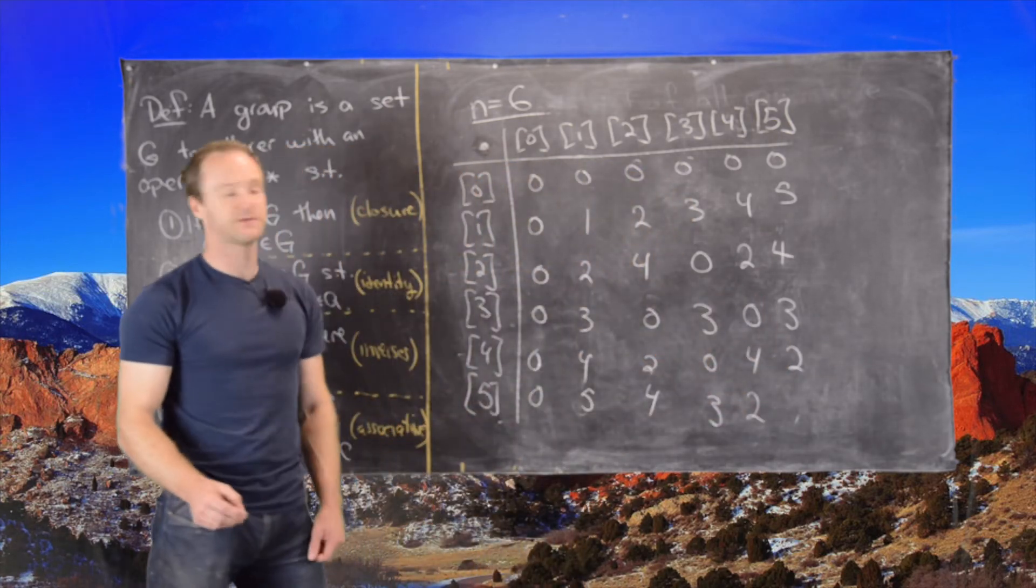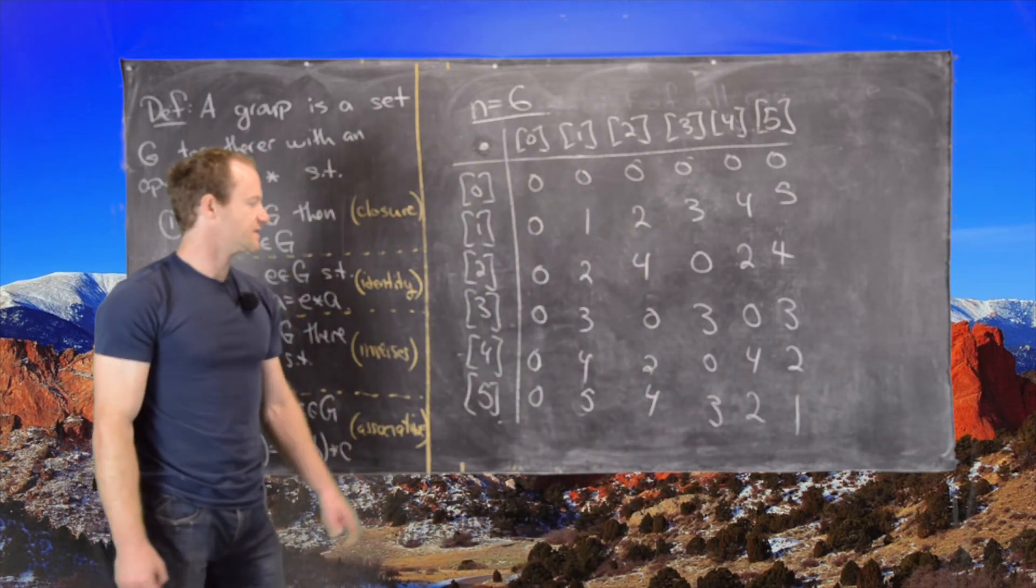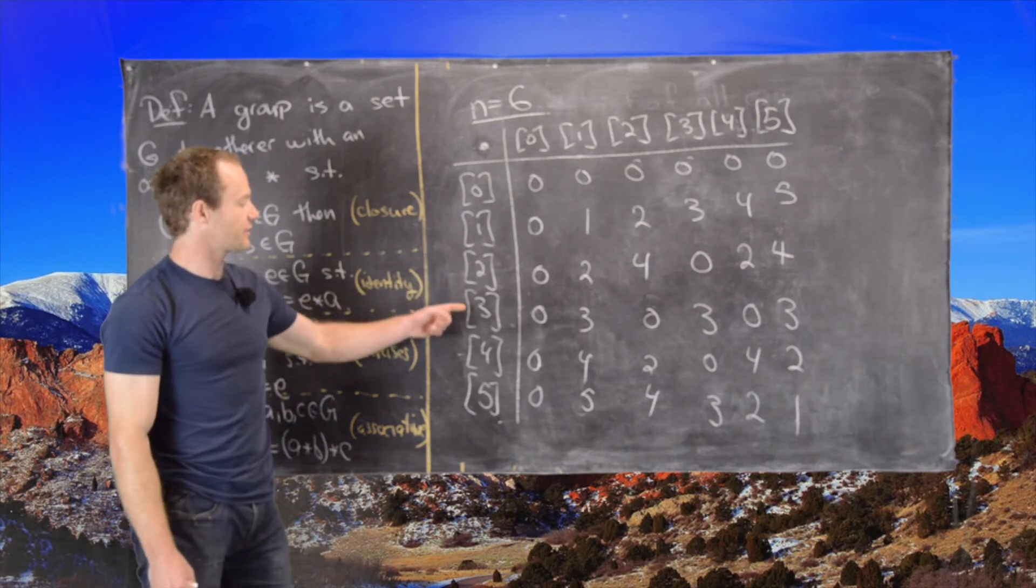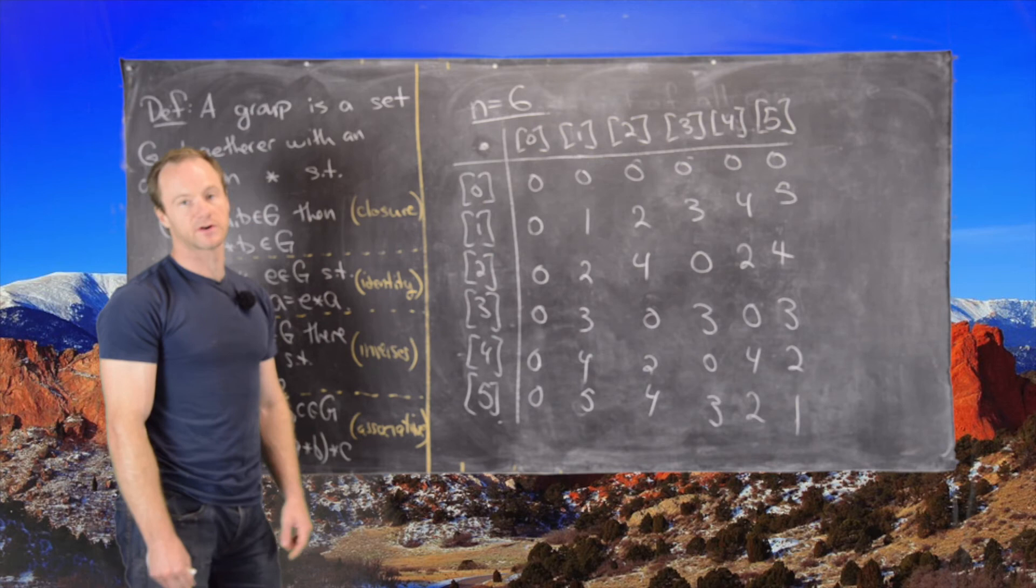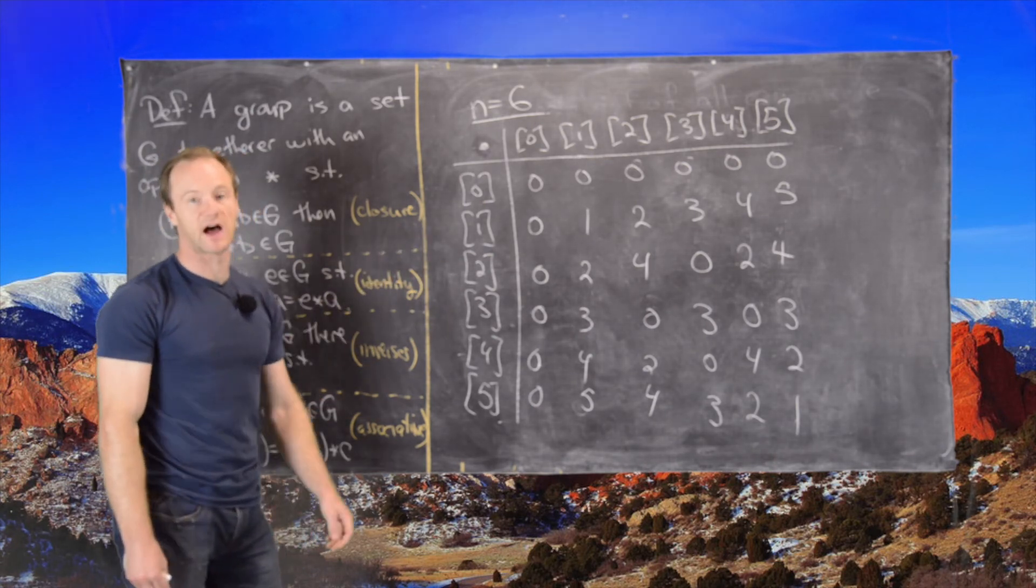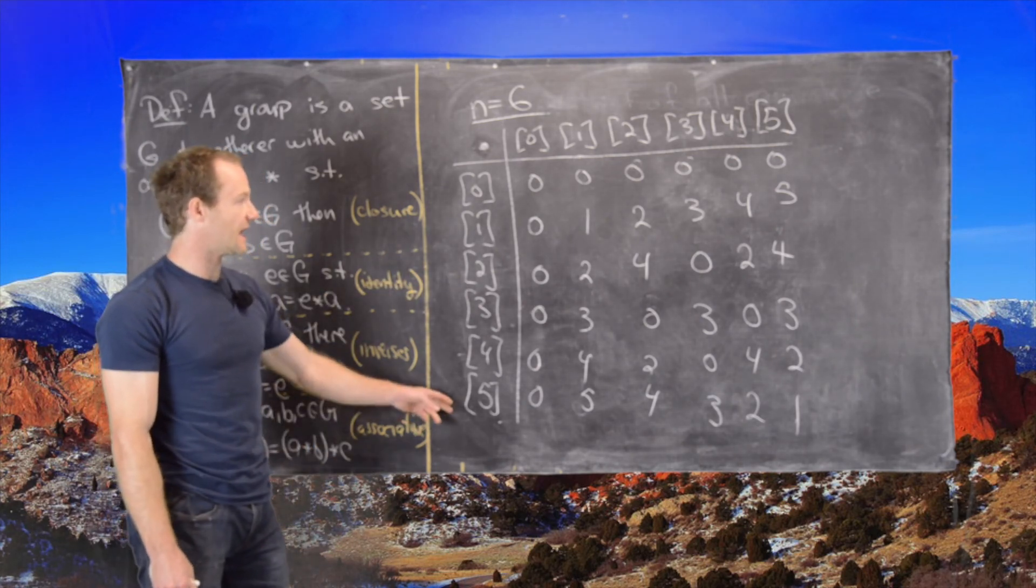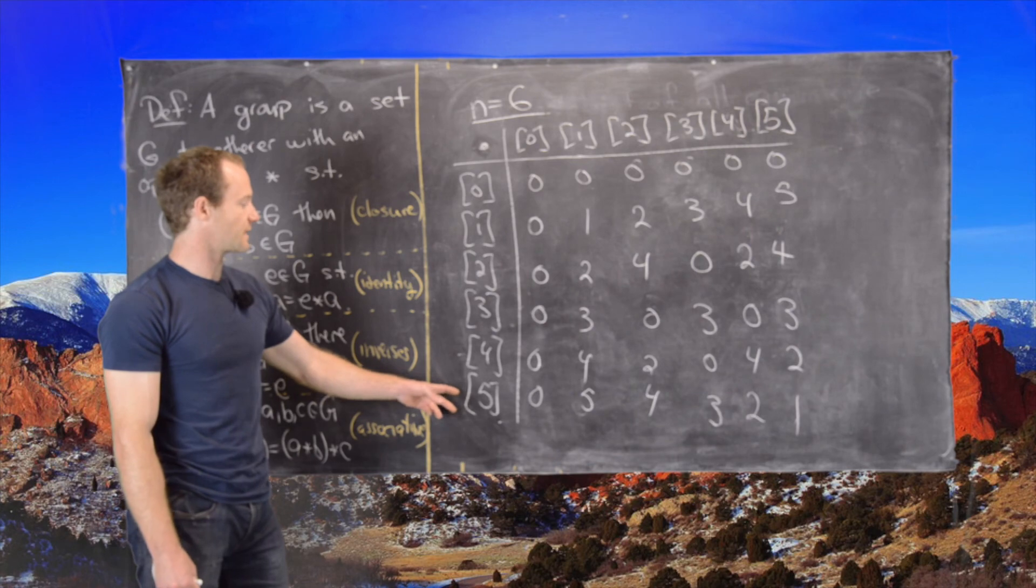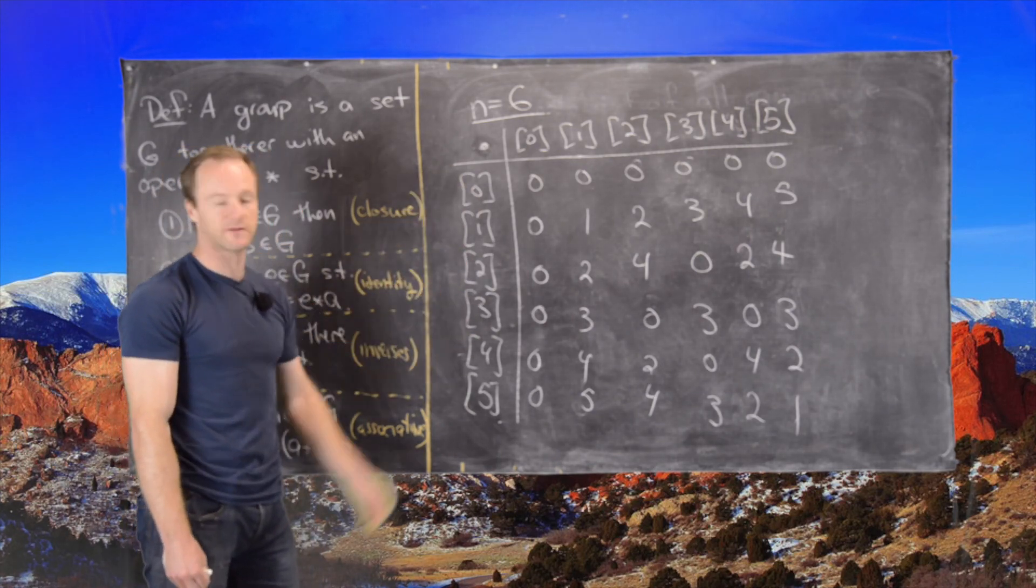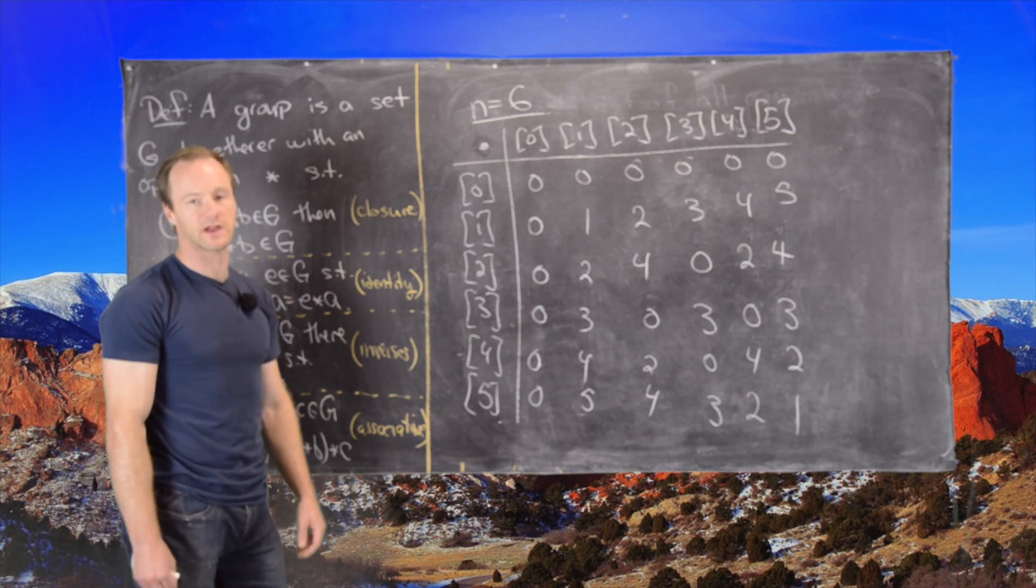And now 5 times 5 is 25, and 25 is 1 mod 6. So now notice that 2, 3, and 4 do not have an inverse mod 6. And so that means that this does not form a group. Now notice that 1 and 5 do have an inverse mod 6, and perhaps we could, that gives us some evidence that we could delete 0, 2, 3, and 4 and end up with a group. But again, that'll be something that we cover in the next video.